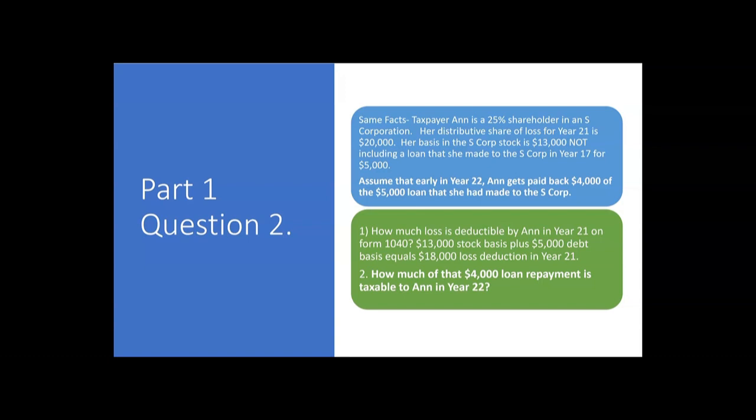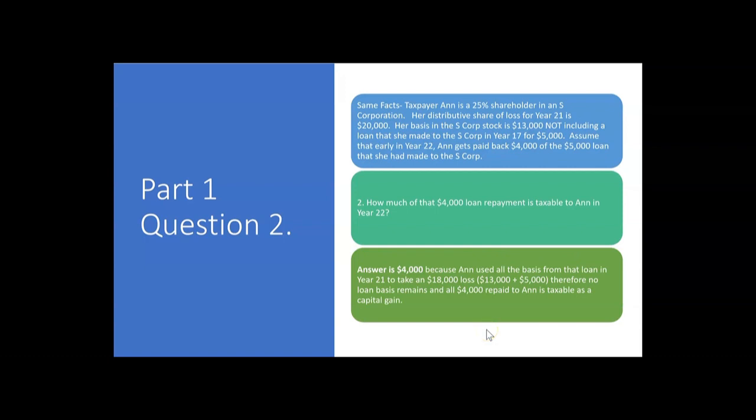We gave her an $18,000 loss deduction in year 21 by allowing her to take her $5,000 debt basis and add it to the $13,000 stock basis. So she has no loan basis left. In year 22, when they give her that $4,000 loan repayment, it's all going to be taxable. All $4,000 as a capital gain in year 22 because there's no debt basis. Because Ann used all that basis from the loan in year 21 to take that $18,000 loss, she has no loan basis remaining in year 22. So all $4,000 repaid to Ann is going to be taxable to her on Form 1040 as a capital gain.